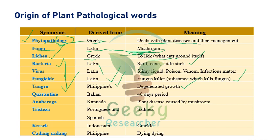Quarantine is an Italian word meaning '40 days period.' Anabi roga is a Kannada word meaning 'plant disease caused by mushrooms.' Tristisa is a Portuguese or Spanish word meaning 'sadness.' These are important technical terminologies in plant pathology.